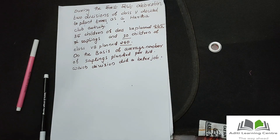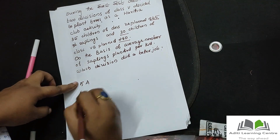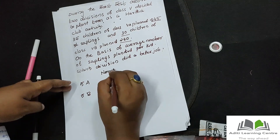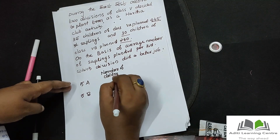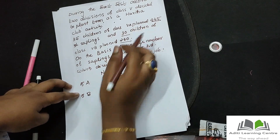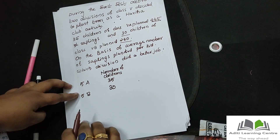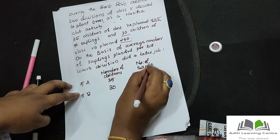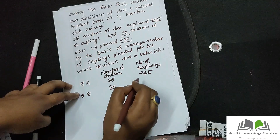This is 5A and 5B. We need to draw the same comparison. We have 5A and 5B. That is the number of children — 5A is 35, 5B is 30. The number of saplings planted: 5A is 245, 5B is 240.